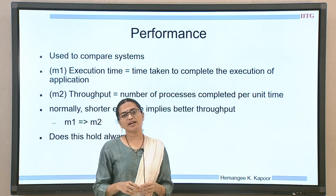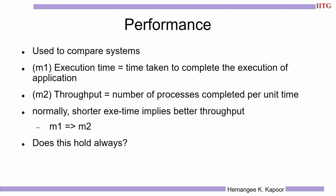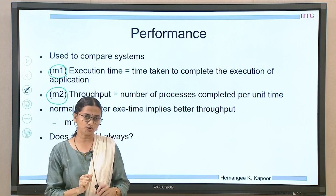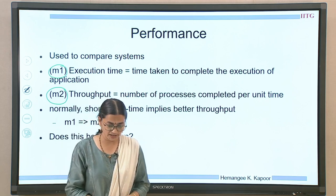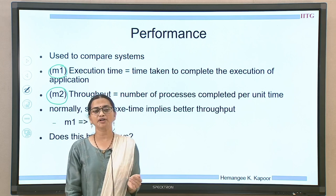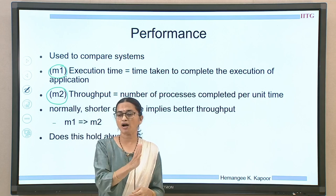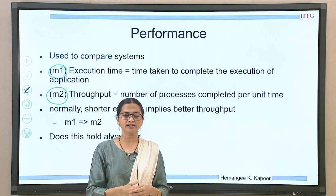In terms of a computer or a machine, to define performance we can use two metrics M1 and M2. The first metric M1 is execution time, and the second metric M2 is throughput. Execution time is the time taken to complete one full execution from beginning to end — how much time, using the wall clock, you take to complete the program. Throughput essentially says the number of processes that get completed per unit time; it does not care how long one process takes, but per unit time how much work is getting output.